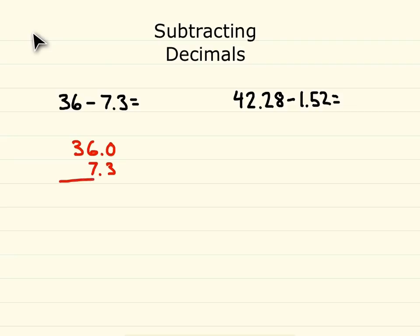Let's go ahead and get our subtraction set up now. We have 36 and 0 tenths minus 7 and 3 tenths. Notice how our decimals lined up. Whenever you do subtraction, always make sure your decimals are lined up. Well, first we need to borrow because we can't take 3 away from 0.